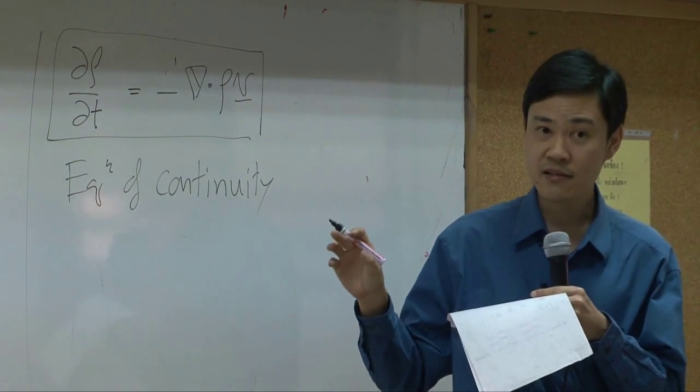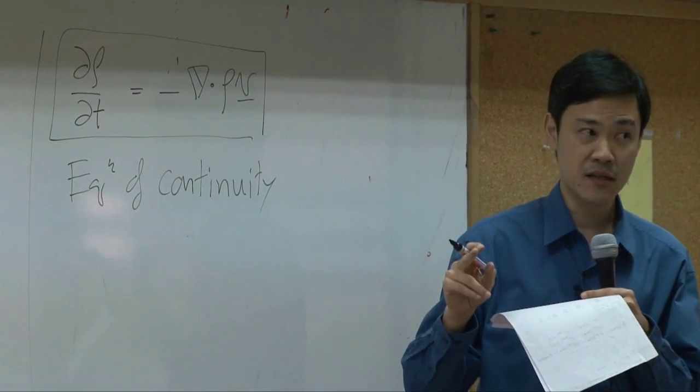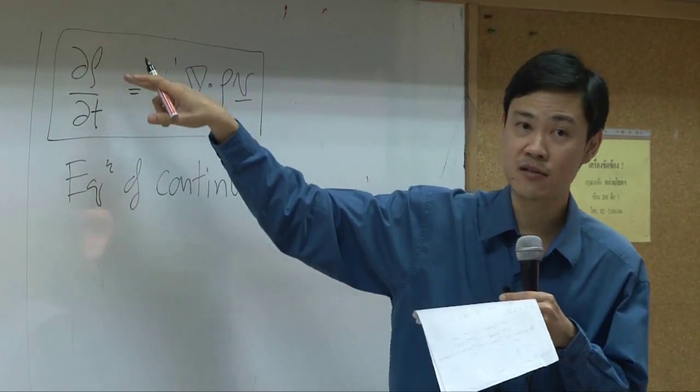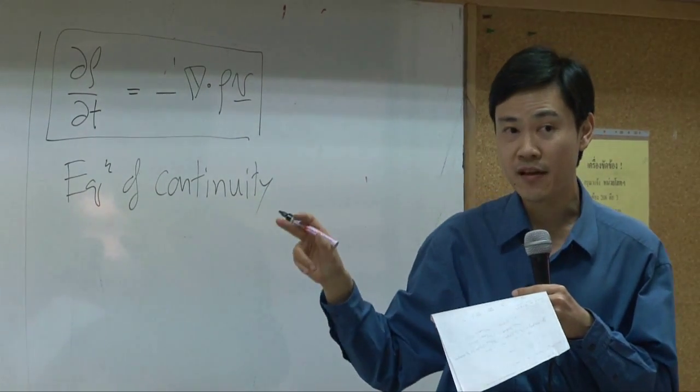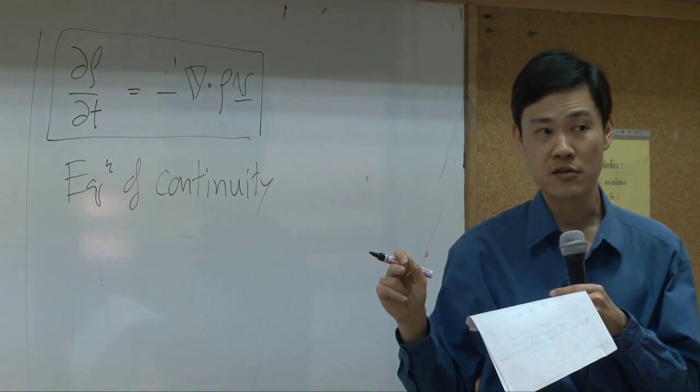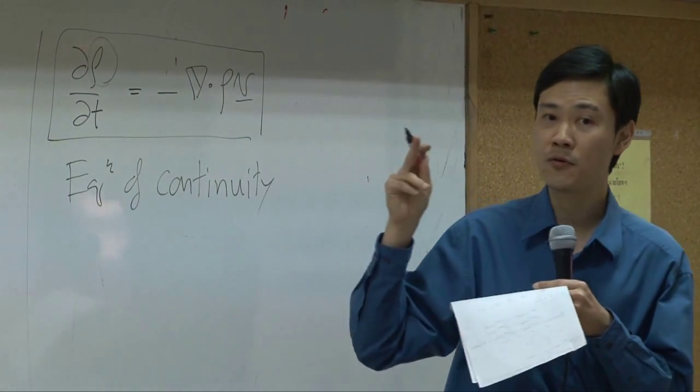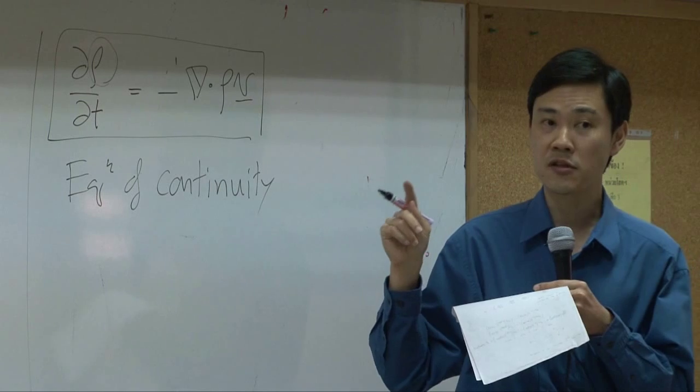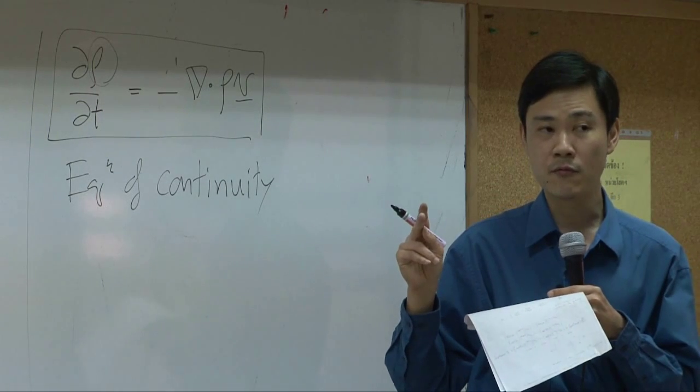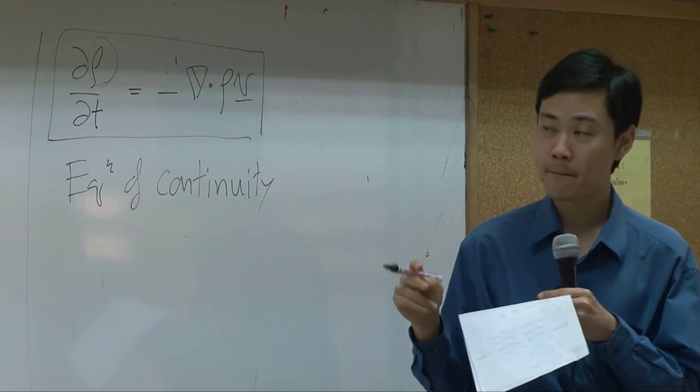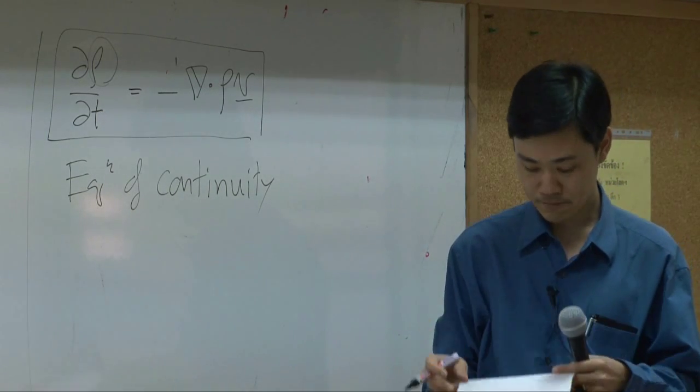But in this case, when you have more than one specie, the total concentration or density of the mixture is also the same thing as the total concentration. So this ρ gives you two ideas. First would be total concentration. Then the second one would be the density of the mixture.